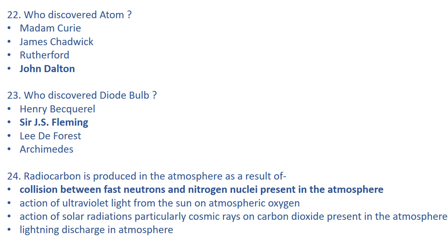Who discovered the atom? The answer is John Dalton, who discovered the atom in 1808. James Chadwick discovered the neutron in 1932. Rutherford discovered the proton in 1919. Who discovered the diode bulb? The right answer is J.S. Fleming, who discovered the diode bulb in 1904.